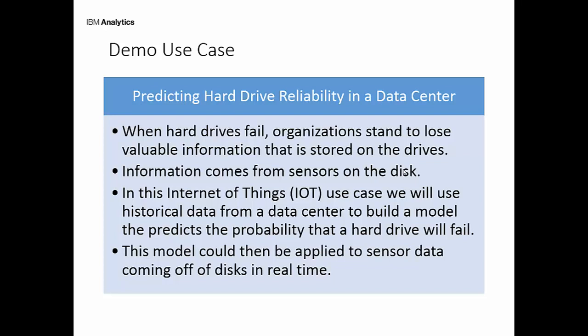When hard drives fail, you can lose valuable information, so it's generally a bad thing. These hard drives in this hard drive farm have sensor values. So what we're going to try to do is use historical sensor values and historical failure information to build a model that uses the sensor information to predict which hard drives are likely to fail. This is an Internet of Things use case — this type of approach could really be applied to any IoT situation, anywhere you have failures and sensor information. And the model, once deployed, could run in some kind of batch process or even in real time.